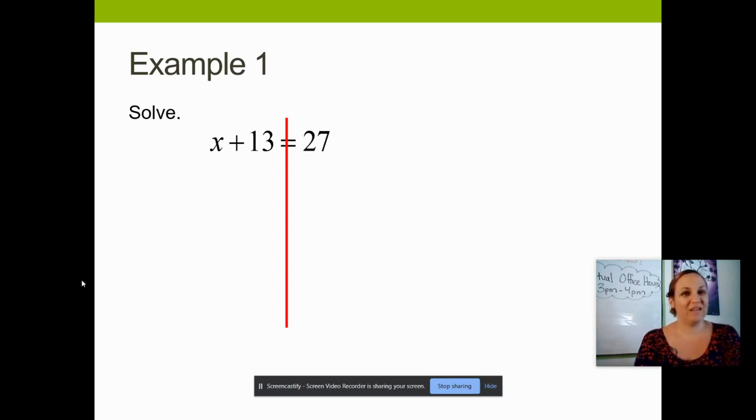The inverse of adding is subtracting. So I will be subtracting 13 from both sides. On the side where you did the inverse, the positive 13 and the negative 13, those will cancel out, leaving us with no more number 13 on this side and only the letter x, which was our goal.